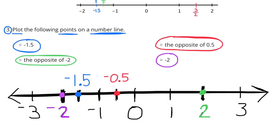Number 3. Plot the following points on a number line. Negative 1 and 5 tenths: in blue, you can see negative 1 and 5 tenths to the left of 0, halfway between negative 1 and negative 2.